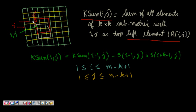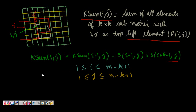We subtract S[i−1][j] (the top row leaving the window) and add S[i+k−1][j] (the new bottom row entering the window). So the recurrence is: KSum[i][j] = KSum[i−1][j] − S[i−1][j] + S[i+k−1][j]. Here i varies from 1 to M−k+1 and j varies from 1 to N−k+1, since the last K×K block must fit within the matrix.